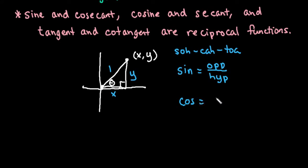Cosine is always the adjacent, which means the side next to but not the hypotenuse, over the hypotenuse, and tangent equals the opposite over the adjacent.